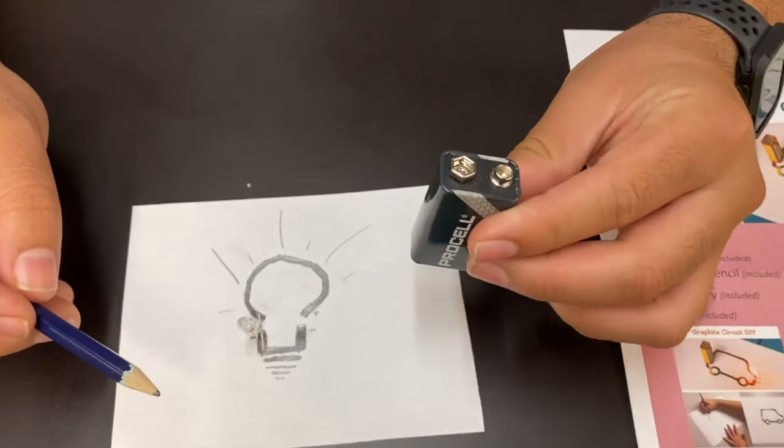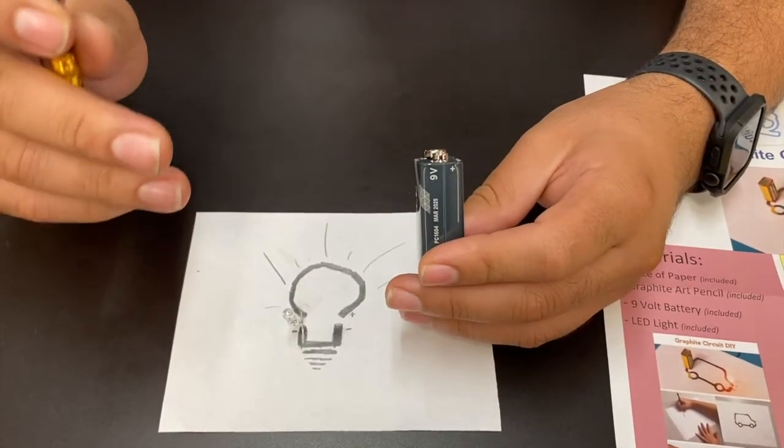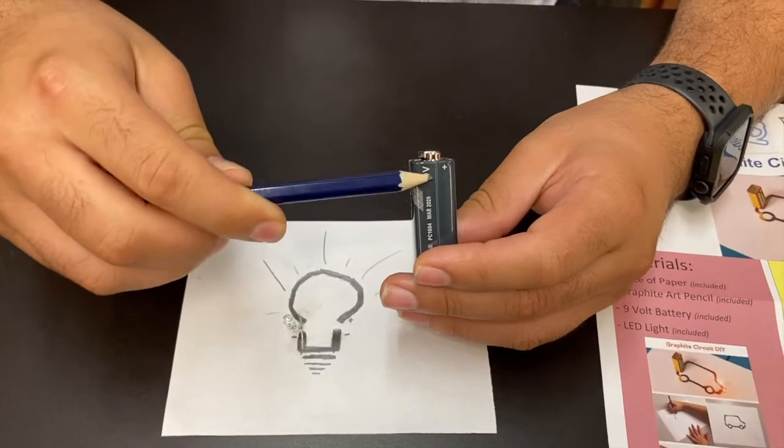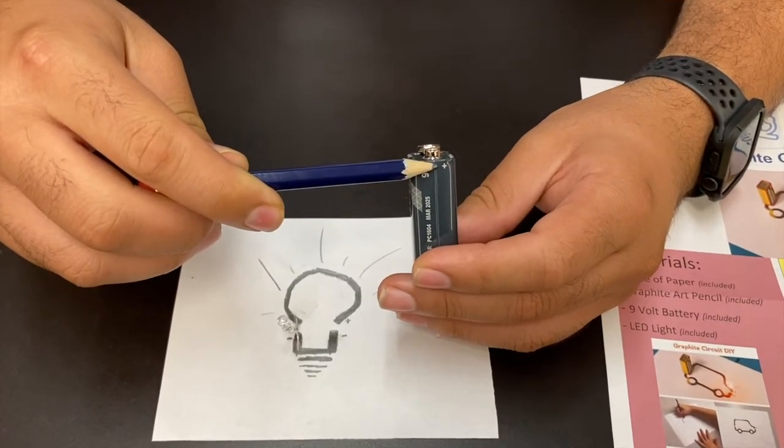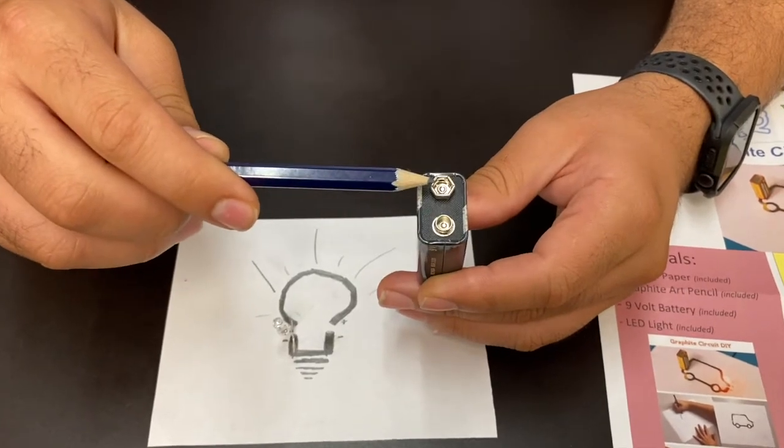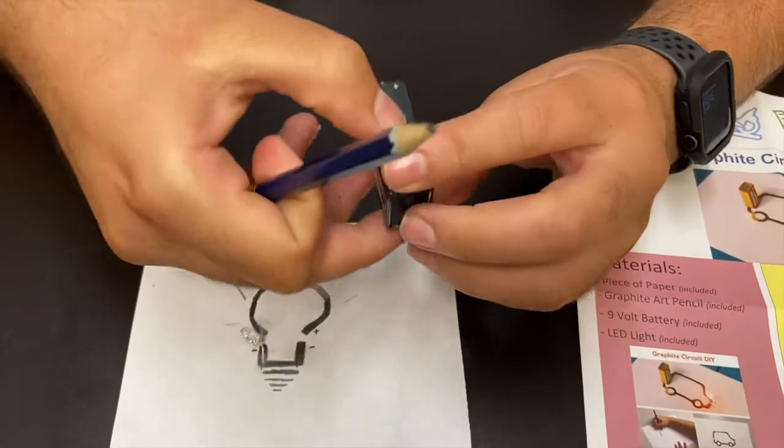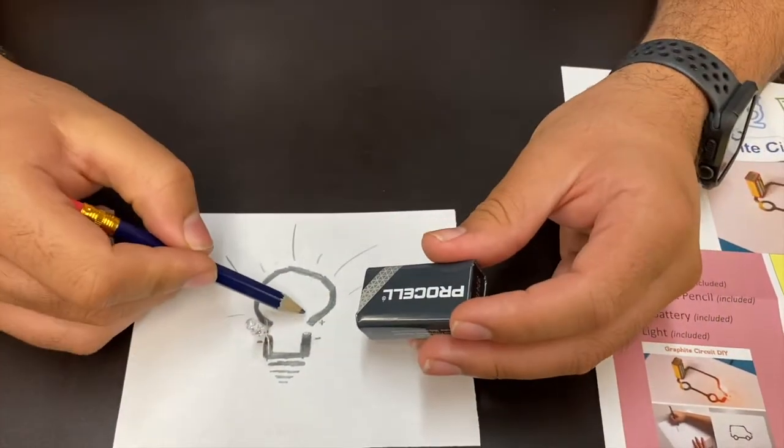Now the easiest way to find which side is positive or negative on our battery is to actually look at the long side. This plus sign is going to correspond to the positive terminal, or the circular side here, and this is going to be our negative terminal, which is hexagonal. So we're going to make sure the hexagon is placed on the negative, the circle is placed on the positive, and that's going to close our circuit.